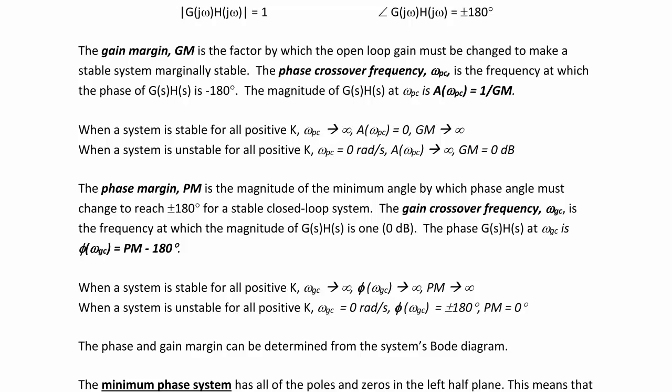The phase margin is the magnitude of the minimum angle by which the phase angle must change to reach plus or minus 180 degrees for a stable closed-loop system. The gain crossover frequency, ω_gc, is the frequency at which the magnitude of G(jω)H(jω) is 1 or 0 decibels. The phase of G(jω)H(jω) at ω_gc equals the phase margin minus 180 degrees. When a system is stable for all positive gain k, ω_gc approaches infinity, the phase angle approaches infinity, and the phase margin approaches infinity.